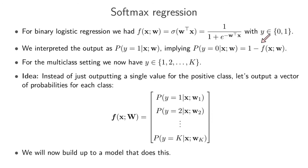The problem is you can't directly use this in the multi-class setting, because now we don't have just one positive class — we have up to capital K classes. In the binary case we implicitly got the probability for the negative class, but here we can't do that because we have more than just two classes.